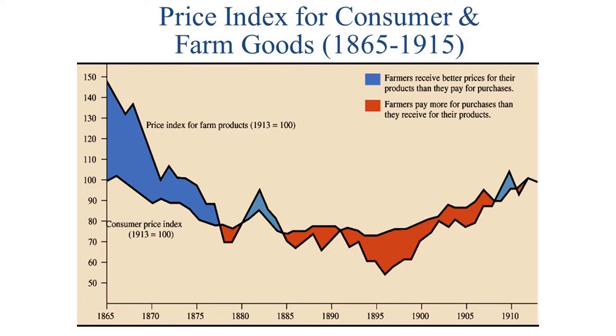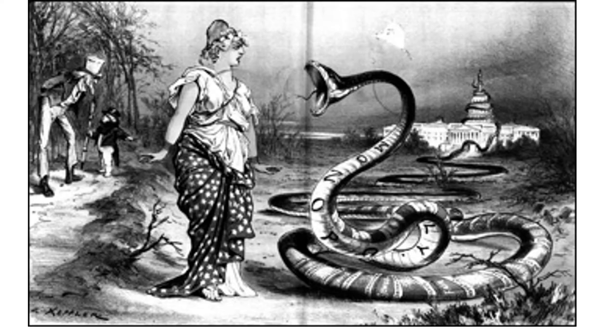The railroad industry had grown, but if you were out in the middle of an agricultural area, you were probably not near a railroad. And if one was near, there wasn't any competition. In a laissez-faire world, there were no regulations — the railroad owner could just charge whatever he wanted. It was a monopoly. A cartoon depicts Lady Liberty representing the farmers being threatened by a snake with 'Monopoly' written on it, while Uncle Sam in the background is being distracted by a wealthy-looking man.